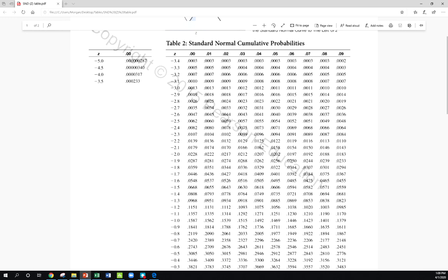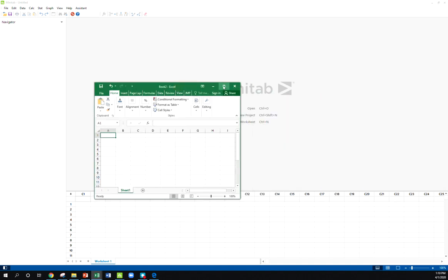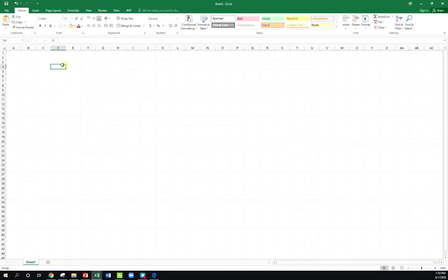If I wanted to check myself in Excel, we could bring up an Excel sheet here. I could go norm.s.dist, our z-score for our test statistic was negative 1.22. Of course, we want cumulative. And that should agree with whatever we found in our table.